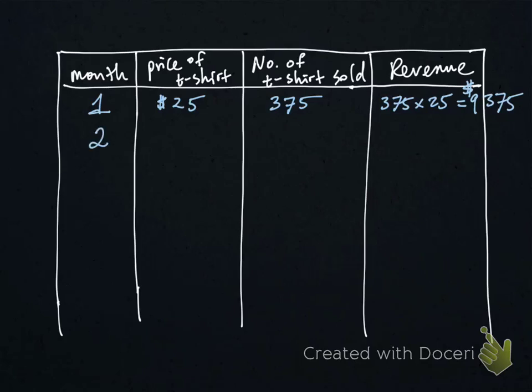So during month two, you charged the t-shirt at $24, and you ended up selling 400 t-shirts in that entire month. And the revenue is 400 times 24, which is $9,600. You like what you saw, and it seems like decreasing the price of the t-shirt generated more revenue.